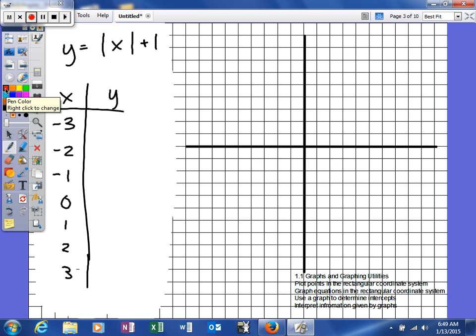When you plug in 0, the absolute value of 0 is 0, add 1 to it, and you get 1. Remember, absolute value is the distance a number is from 0 on the number line.